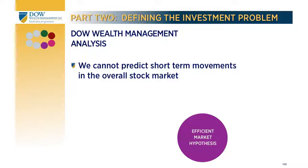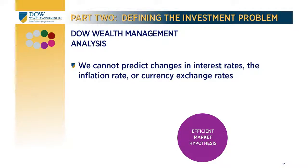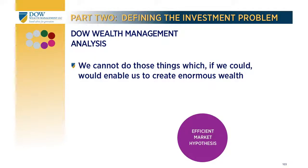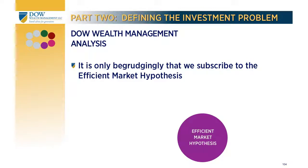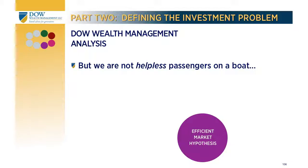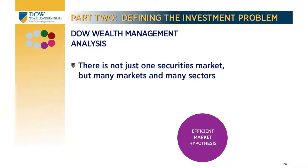We cannot predict short-term movements in the overall stock market. We cannot predict changes in interest rates, inflation rates, or currency exchange rates. We cannot outperform the market sector in which we invest. Depressing, isn't it? We cannot do the very things which, if we could, would enable us to create enormous wealth. It is only begrudgingly that we subscribe to the efficient market hypothesis. This is bad news for investment strategy design because we cannot rely on our financial advisor, our neighbor, or the person we read about in the newspaper to tell us when to get out — their accuracy is no better than random chance.